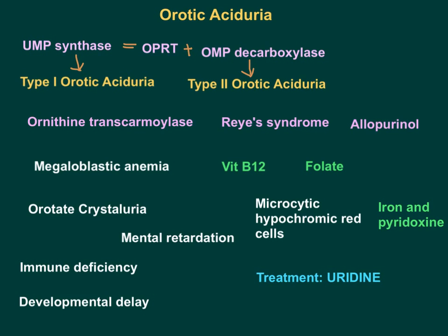Apart from this autosomal recessive Type 1 and Type 2, orotic aciduria in general can be caused by defect or deficiency in the urea cycle enzyme called ornithine transcarbamylase (OTC). OTC in the mitochondrial matrix condenses carbamyl phosphate with ornithine to make citrulline. If OTC is deficient, there will be elevation of carbamyl phosphate in the mitochondria, which will leak out into the cytoplasm, enter pyrimidine biosynthesis, and ultimately increase orotic acid — giving rise to orotic aciduria.